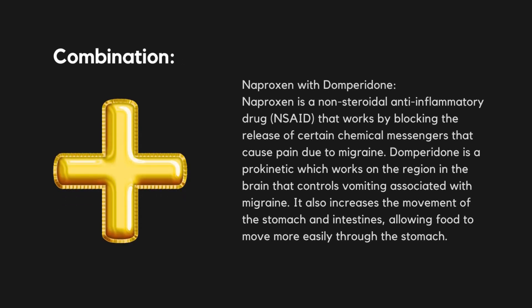Combination: Naproxen with Domperidone. Naproxen is a non-steroidal anti-inflammatory drug (NSAID) that works by blocking the release of certain chemical messengers that cause pain due to migraine. Domperidone is a prokinetic which works on the region in the brain that controls vomiting associated with migraine. It also increases the movement of the stomach and intestines, allowing food to move more easily through the stomach.